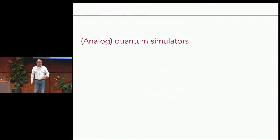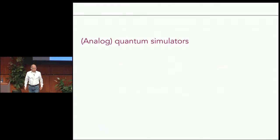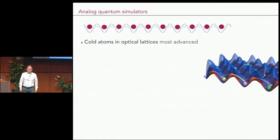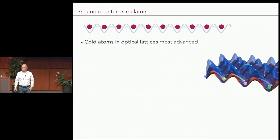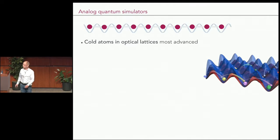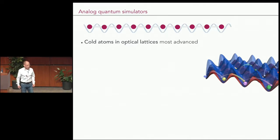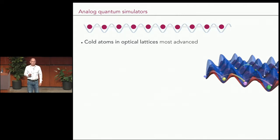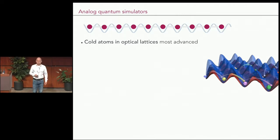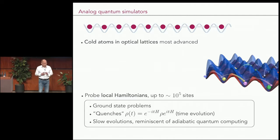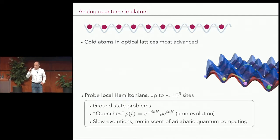Analog quantum simulators — the most advanced architecture for that type of endeavor is cold atoms in optical lattices. There's a lot to say about that, but for today's purposes, I think it's good enough to say that these are very large scale lattice simulators.